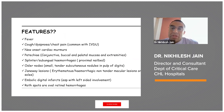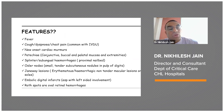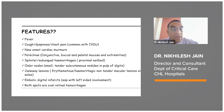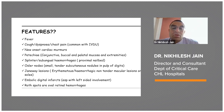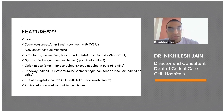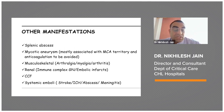Common features of infective endocarditis include fever, cough, dyspnea, or chest pain — more common with IV drug abuse — and new onset cardiac murmurs on clinical examination. Skin findings include petechiae on conjunctiva, buccal and palatal mucosa, and extremities; splinter hemorrhages; Osler nodes, which are small tender subcutaneous nodules specifically in the pulp of digits; and Janeway lesions, which are erythematous or hemorrhagic non-tender macular lesions on palms and soles.